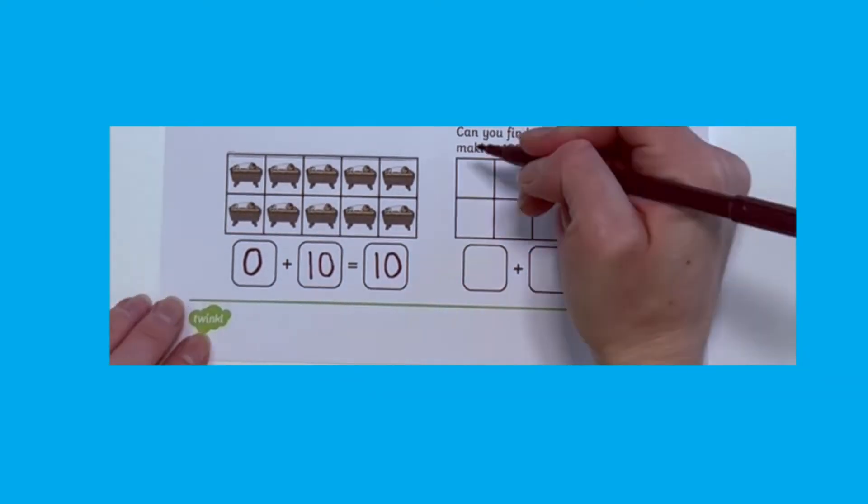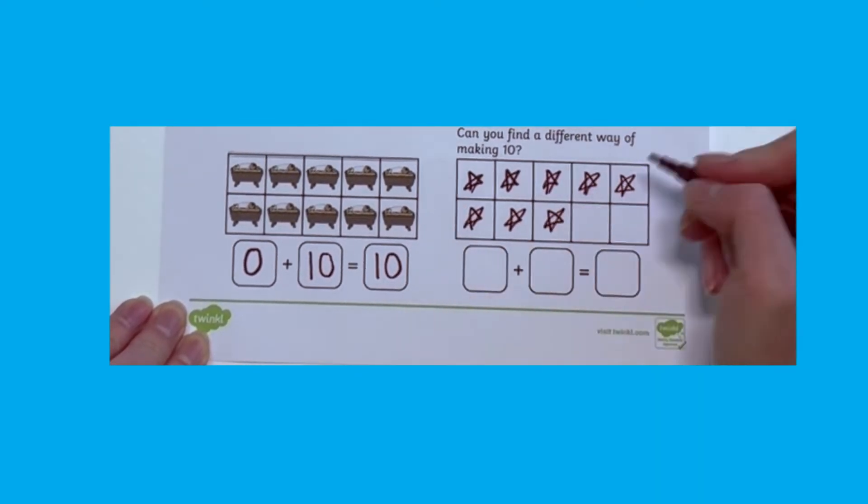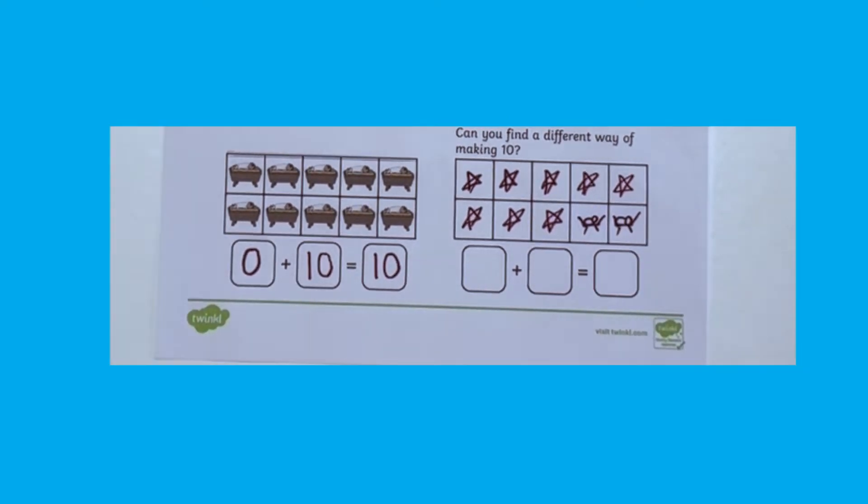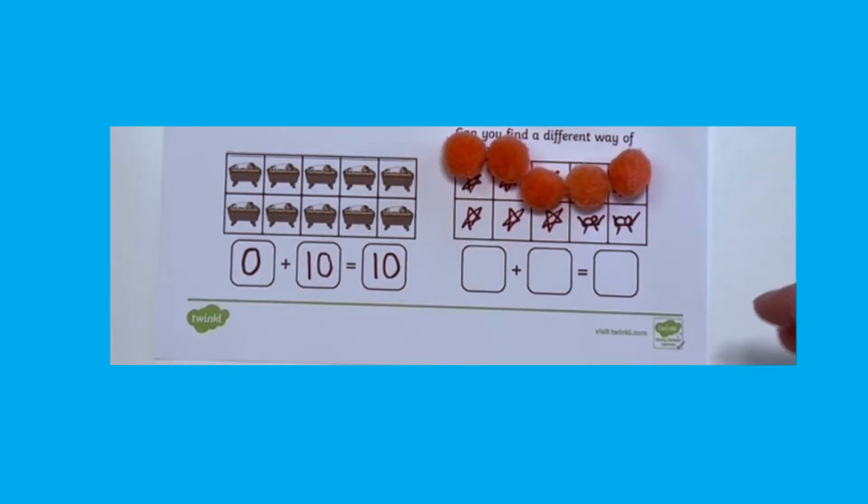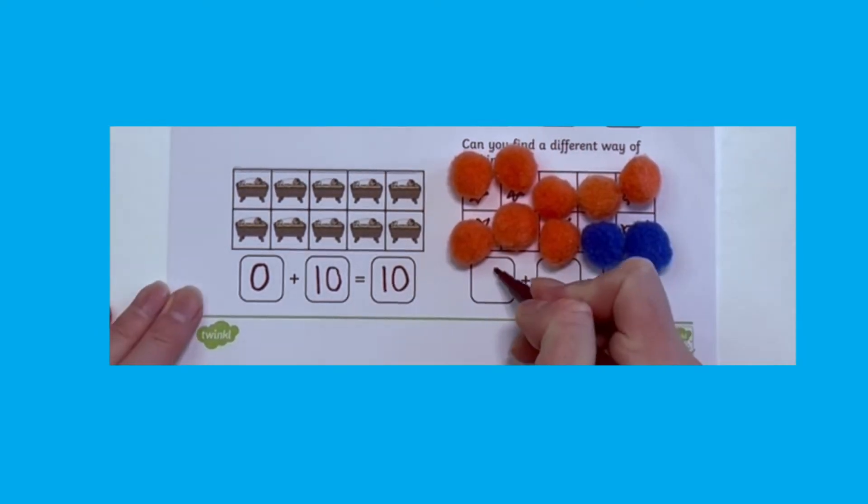The final question challenges children to find a different way of making 10. Can they draw their own pictorial representation? They could then check it using pom-poms or give it to a friend to try.